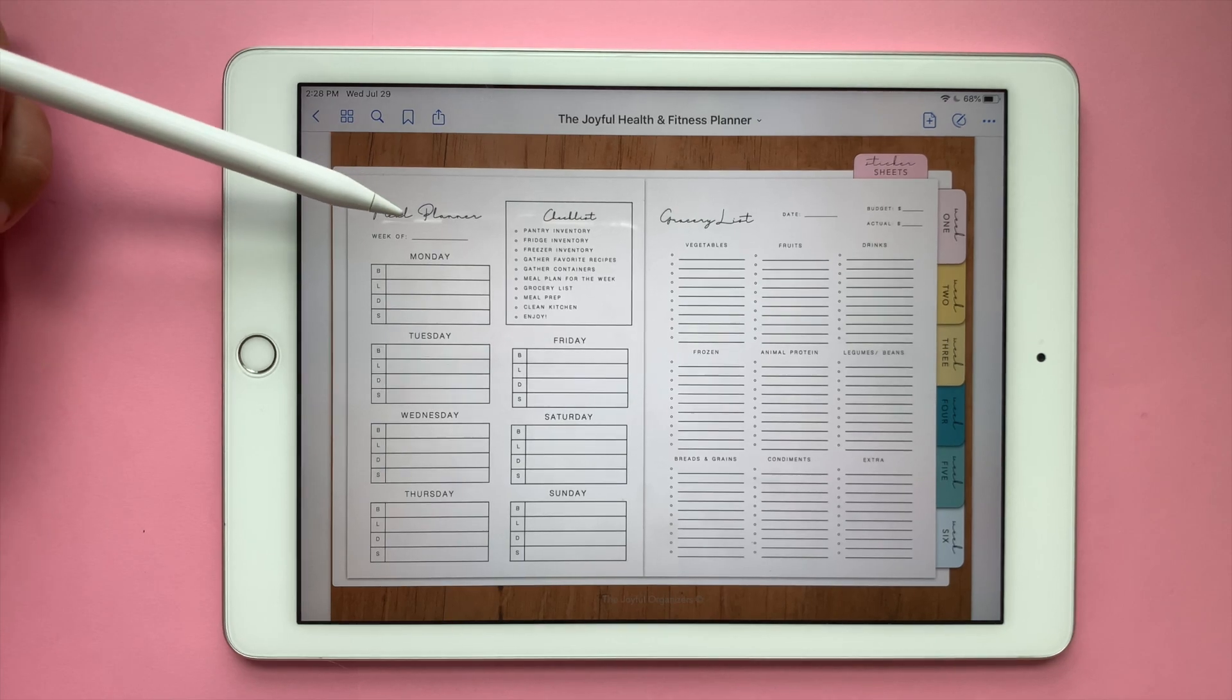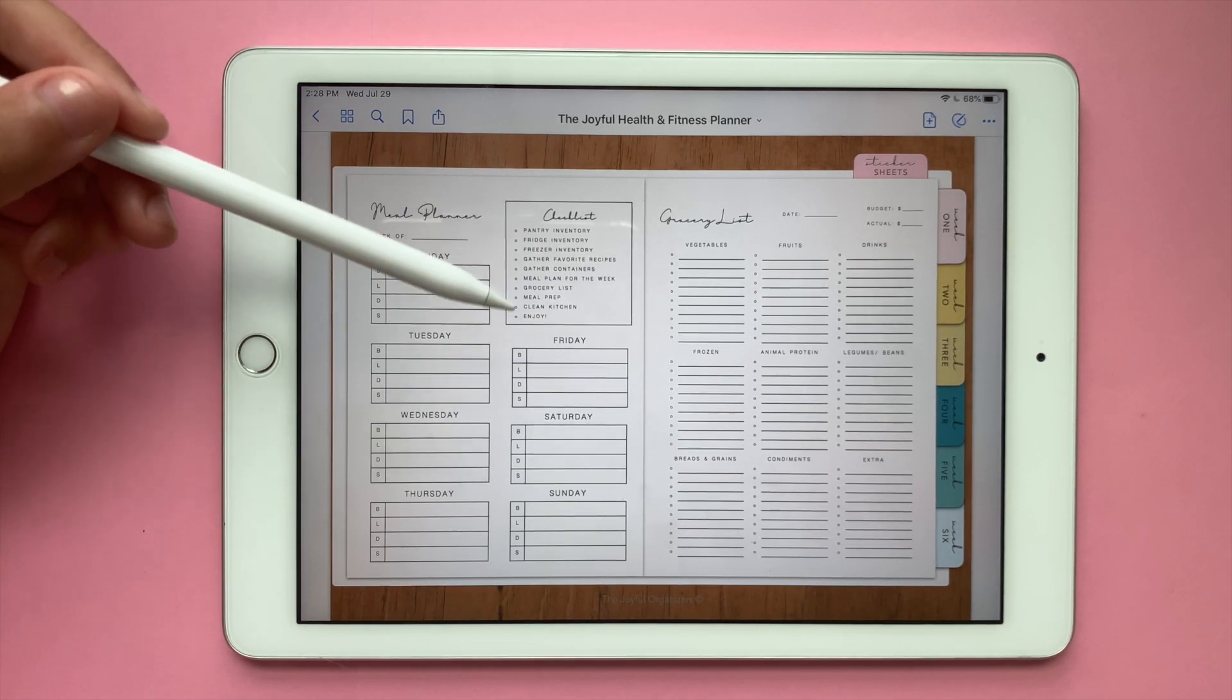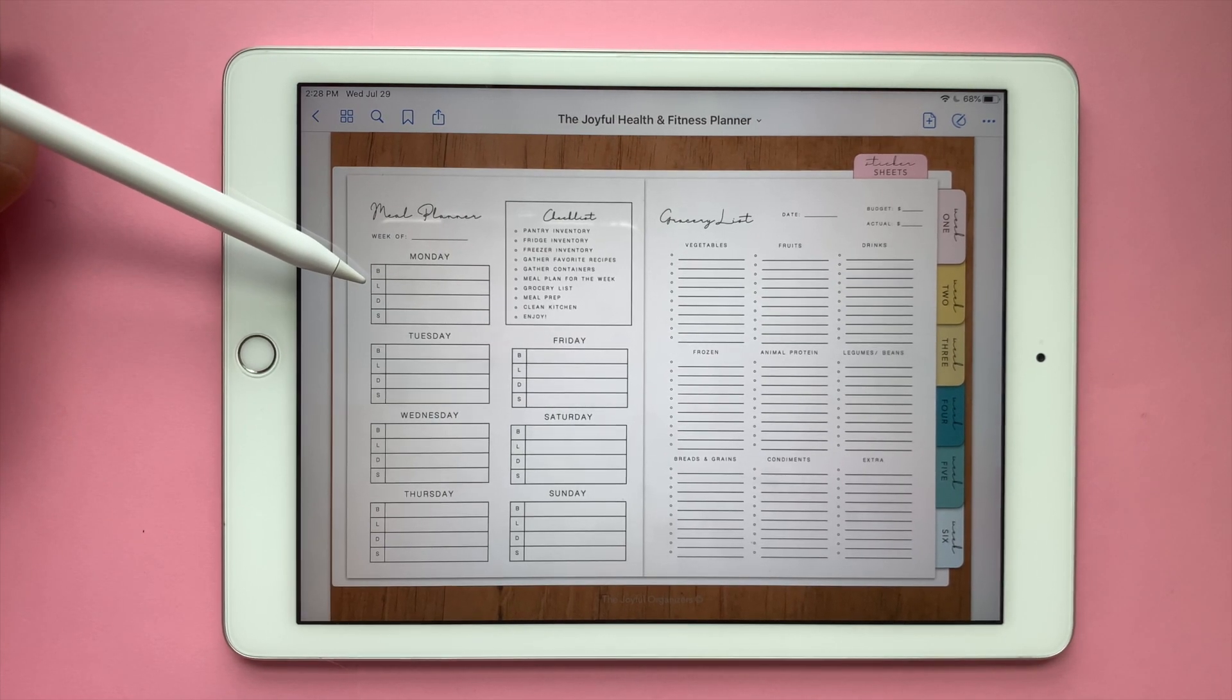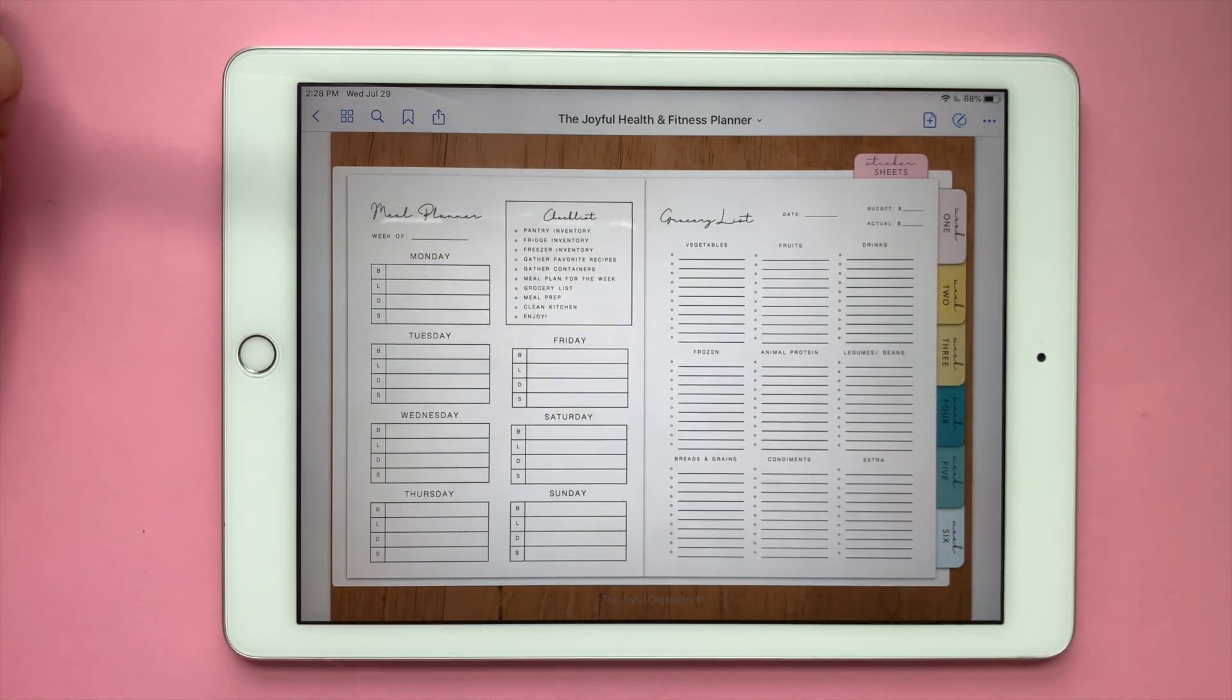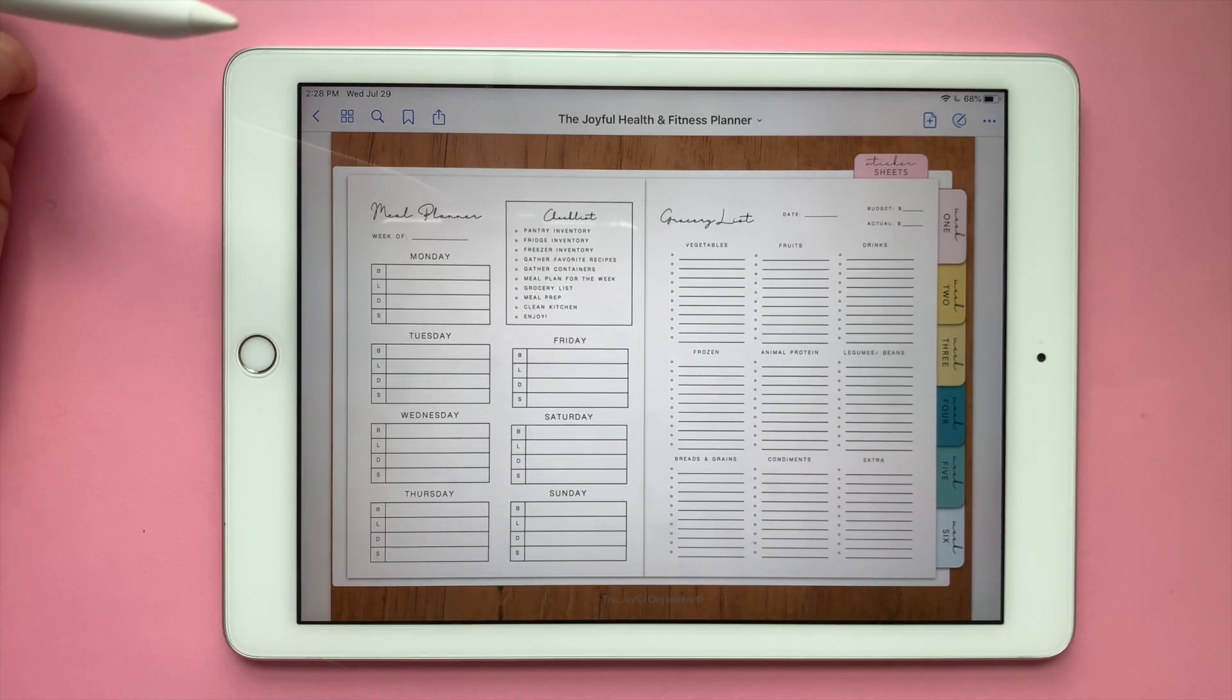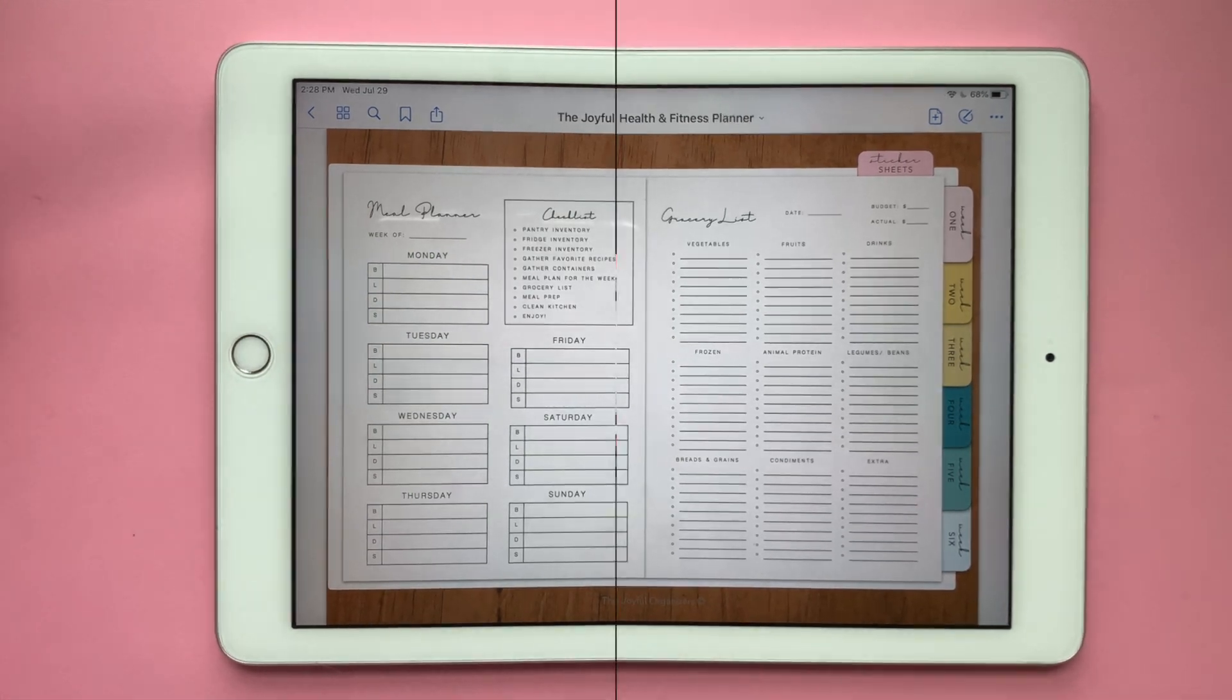The next one is the meal planner and the grocery list. I also made a little checklist checkbox so you can do this while you're meal planning. I have added a breakfast, lunch, dinner, and snacks. Here you have a variety of different categories for your shopping list. I also added a budget tracker and an actual cost so that way you can see how much it was to cover all the meals that you planned for that week.